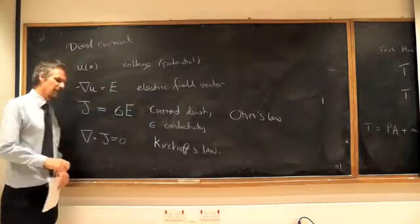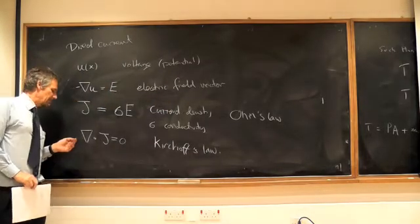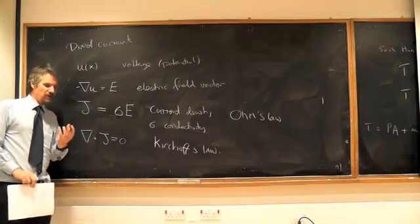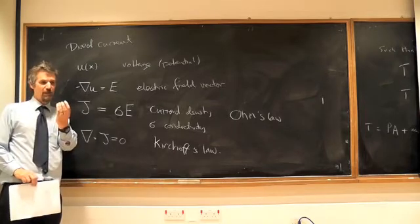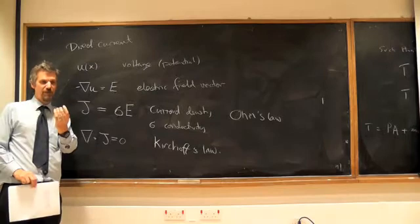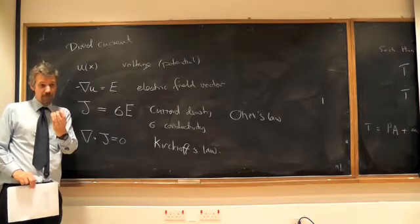So what does it mean? Divergence is a measure of the difference between what goes in and out of an infinitesimal volume. So divergence equals zero means nothing's being lost or gained.